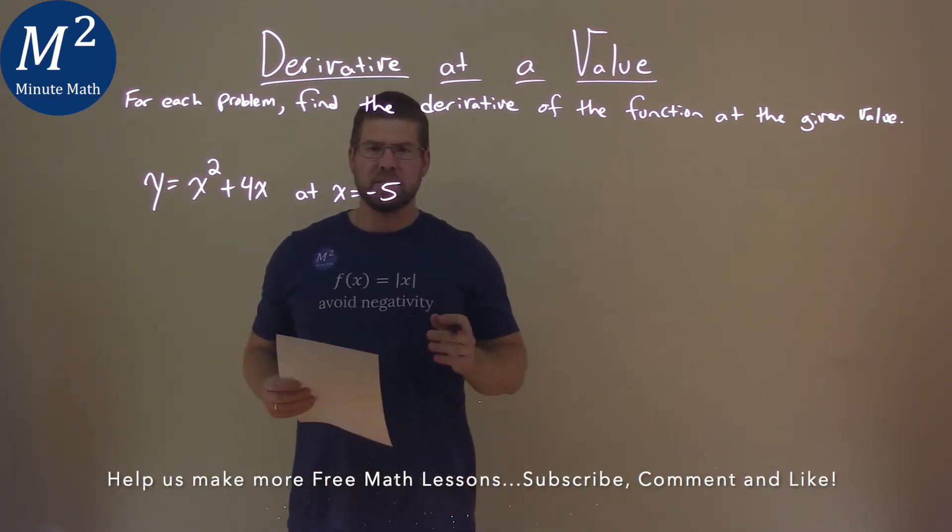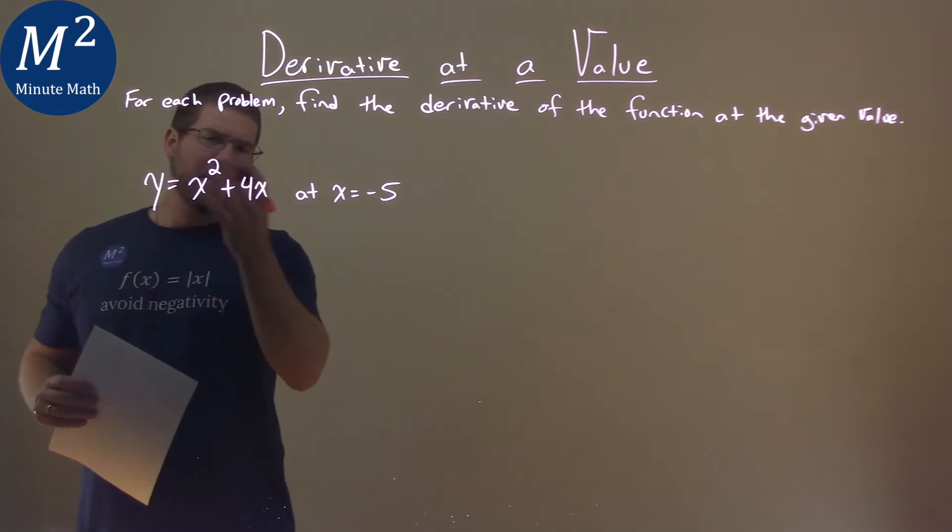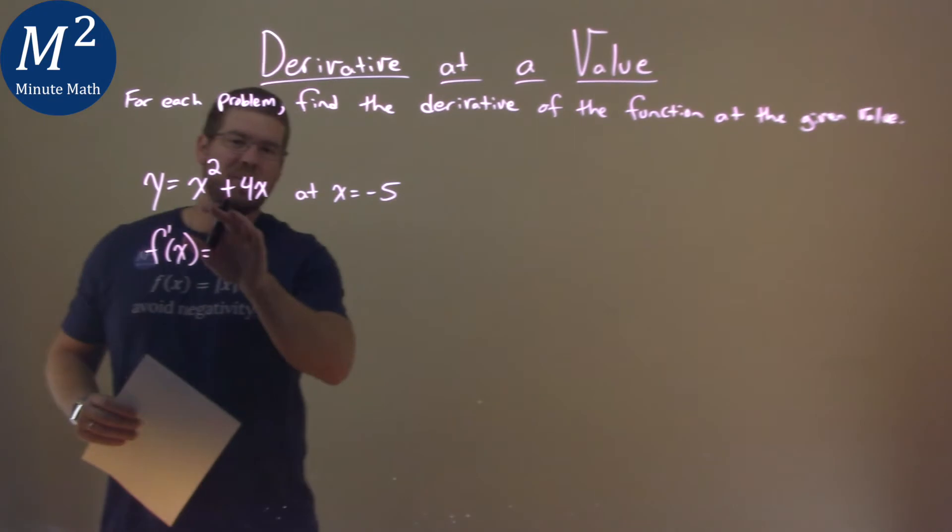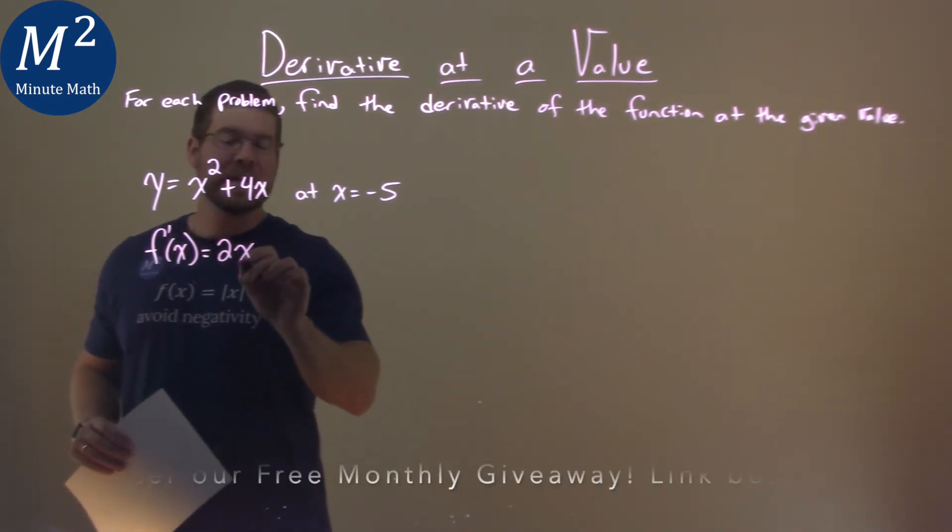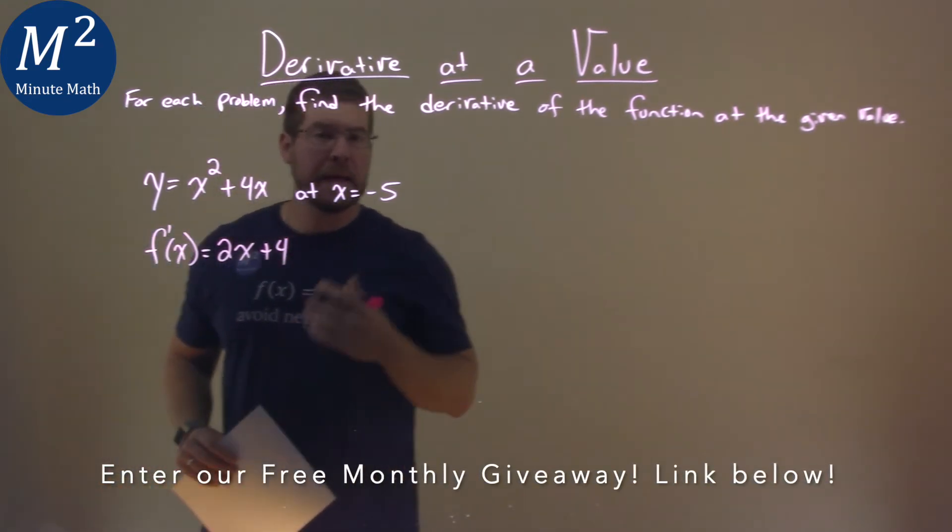First things first, I need to find the derivative. If this is my f of x, we'll call it f prime of x. To take the derivative, we go through each part. Use the power rule here: x squared becomes 2x, and then the derivative of 4x is just 4. Not too bad.